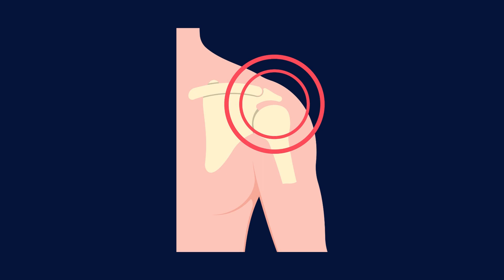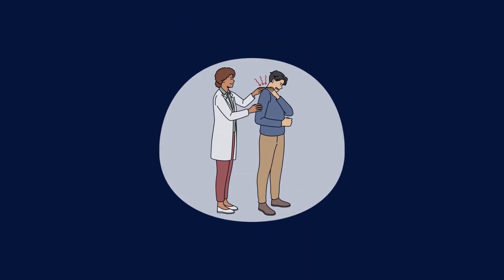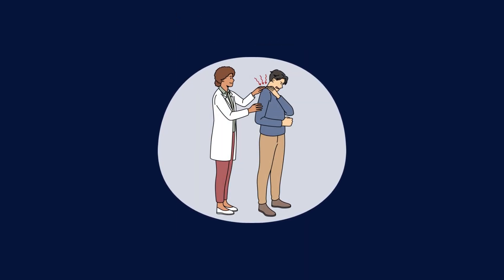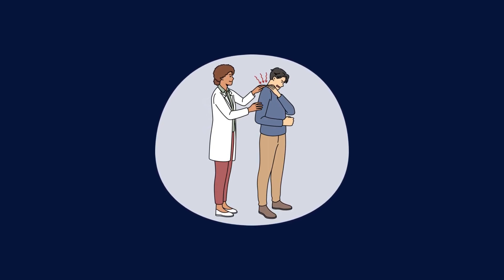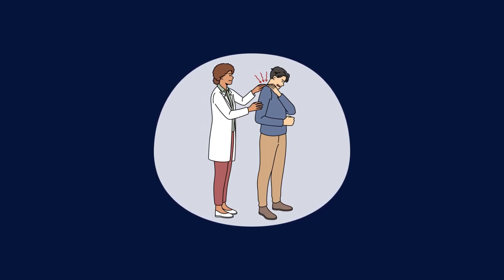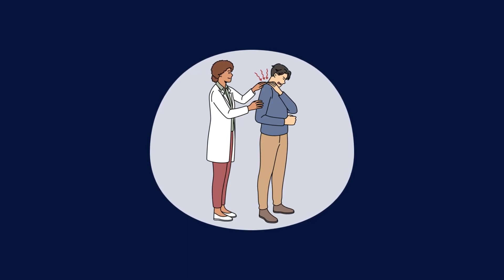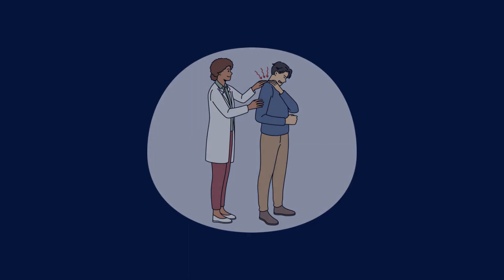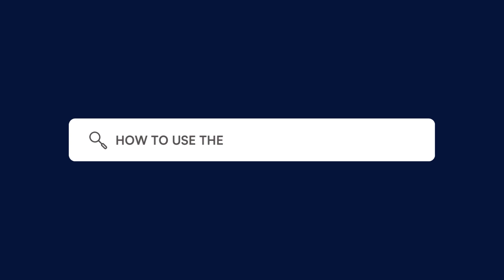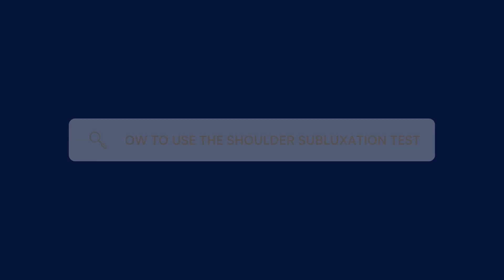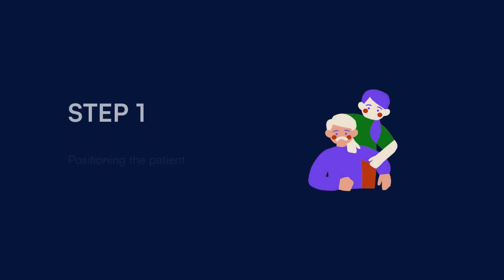To use our free shoulder subluxation test, follow these steps. Download our shoulder subluxation test from the CarePatron platform, which you can find in the link in the description. The first step involves positioning the patient so the healthcare provider can easily access and have a clear shoulder view. The patient may be asked to sit upright or lie down based on the type of tests being performed and the patient's comfort.